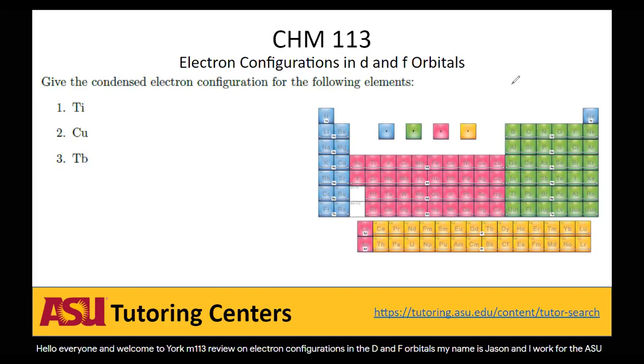Remember, condensed electron configuration means you start at the previous noble gas, and then you write out the remainder of the electron configuration.